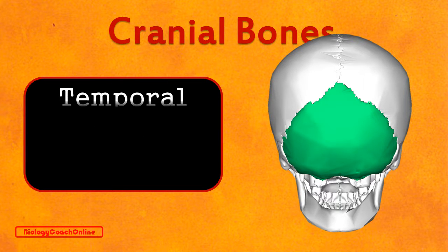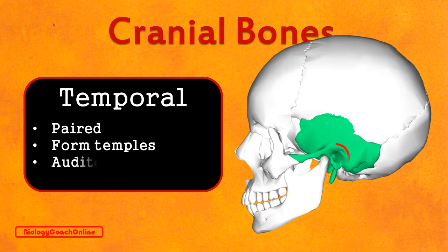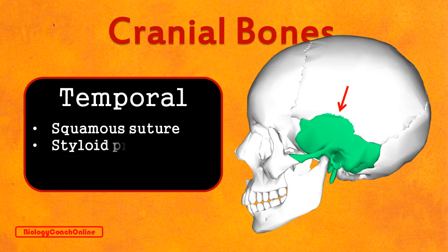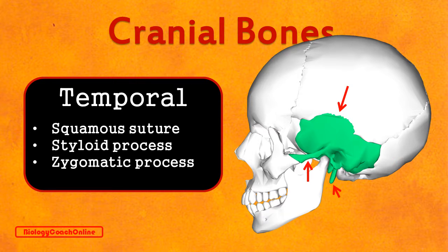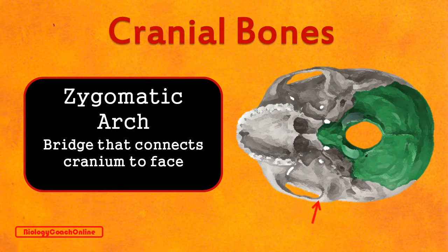Going back to the lateral view, we can clearly see the temporal bone. This is again a paired bone — the temporals form your right and left temples. The temporal bones also house the organs of hearing, and we can see the external auditory meatus, or the outer opening of the ear. Other identifying features of the temporal bone include the squamous suture connecting the temporal bone to the parietal bones above it, the styloid process which serves as an attachment point for various tendons and ligaments, and the zygomatic process which joins the zygomatic bone to form the zygomatic arch.